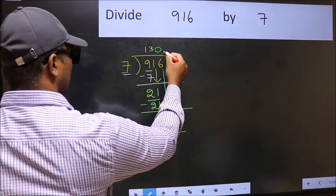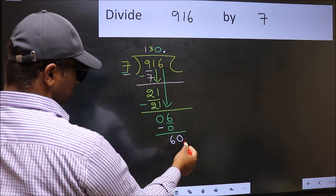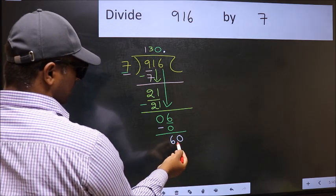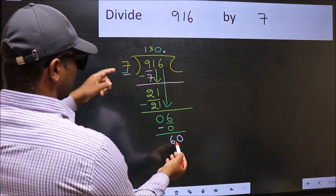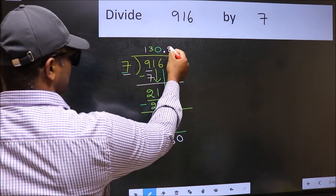So 60. A number close to 60 in the 7 table is 7 times 8, which is 56.